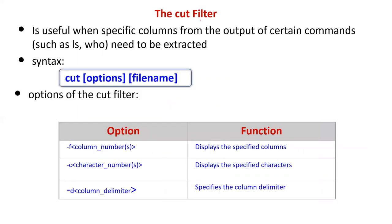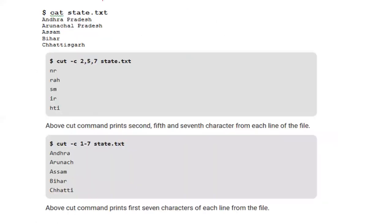Next is cut filter. Cut filter is used when specific columns from the output of certain commands need to be extracted. If you have columns you want to extract, you use this cut filter. Options include hyphen f to display specified columns, hyphen c to display specified characters, and hyphen d for column delimiter. Here's an example: there's a text file named state.txt. You can use hyphen c with a range like one to seven to extract those character positions.